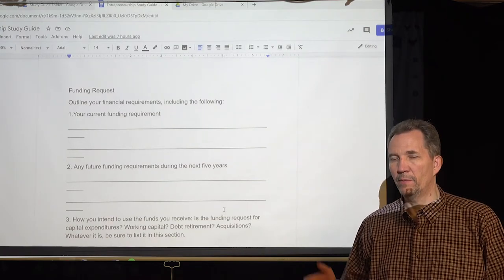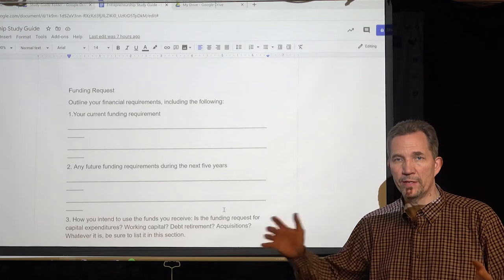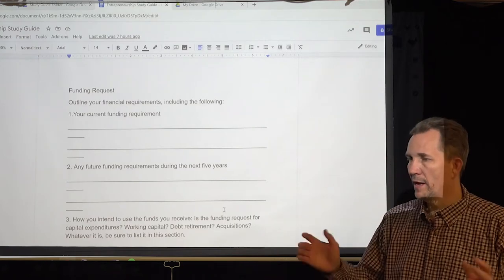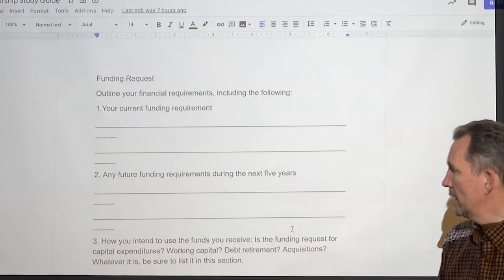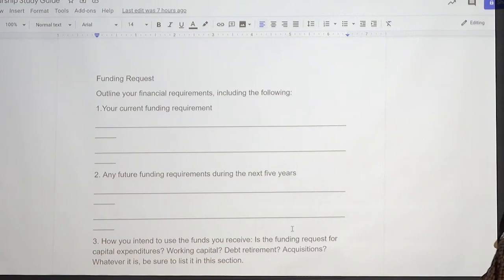And you know, then you can say, and this is how much I make, but in order to grow the business, I need to do more. Okay, but right now, what am I doing? And then it says any future funding requirements during the next five years.